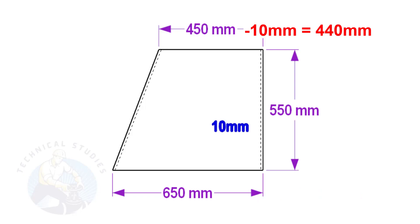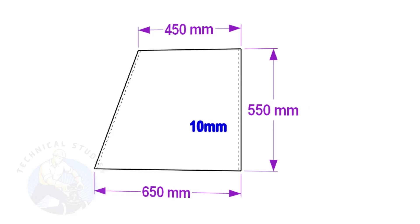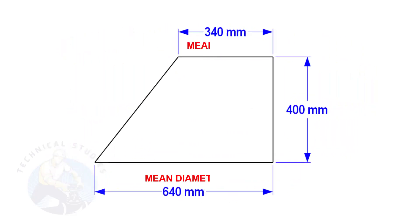Similarly, deduct 10 mm from 450 to get the mean diameter of the top side. In this layout, the bottom and top mean diameters are 640 mm and 340 mm respectively, and the height is 400 mm.